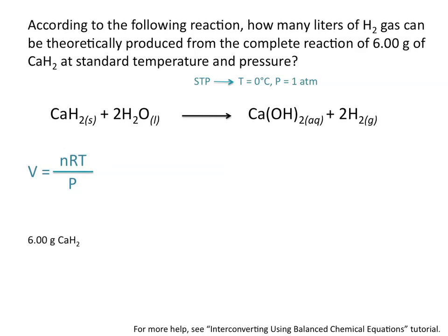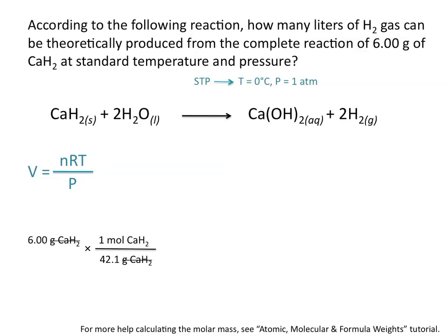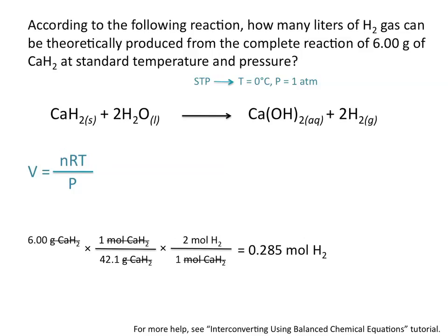This is a calculation you should have done many times before. We'll start with our starting reactant, 6 grams of calcium hydride. Remember that to use the coefficients in our balanced chemical equation, we need to be in moles. So we convert calcium hydride from grams to moles using its molar mass. Now in moles of calcium hydride, we convert to moles of hydrogen using the coefficients: one mole of calcium hydride produces 2 moles of hydrogen gas. This tells us that 0.285 moles of H2 gas could theoretically be produced from 6 grams of calcium hydride.